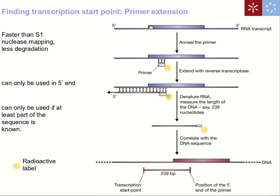If we know a little about the sequence of our gene of interest — especially the sequence near the beginning of the gene — we can use an alternative technique called primer extension. This is faster than S1 nuclease mapping because we don't need to clone any gene. We simply use the sequence information at the beginning of the gene to design an oligonucleotide — essentially a PCR primer — which must be radioactively labeled and must point outward from the gene, with the 5' end facing outward.